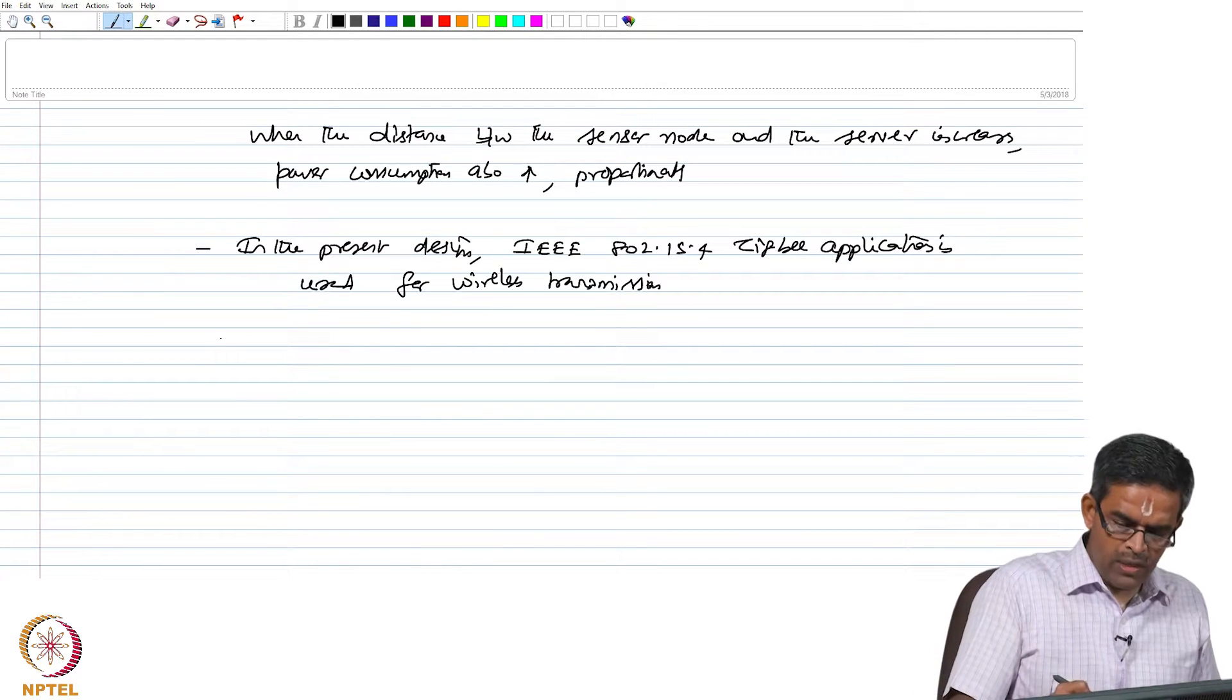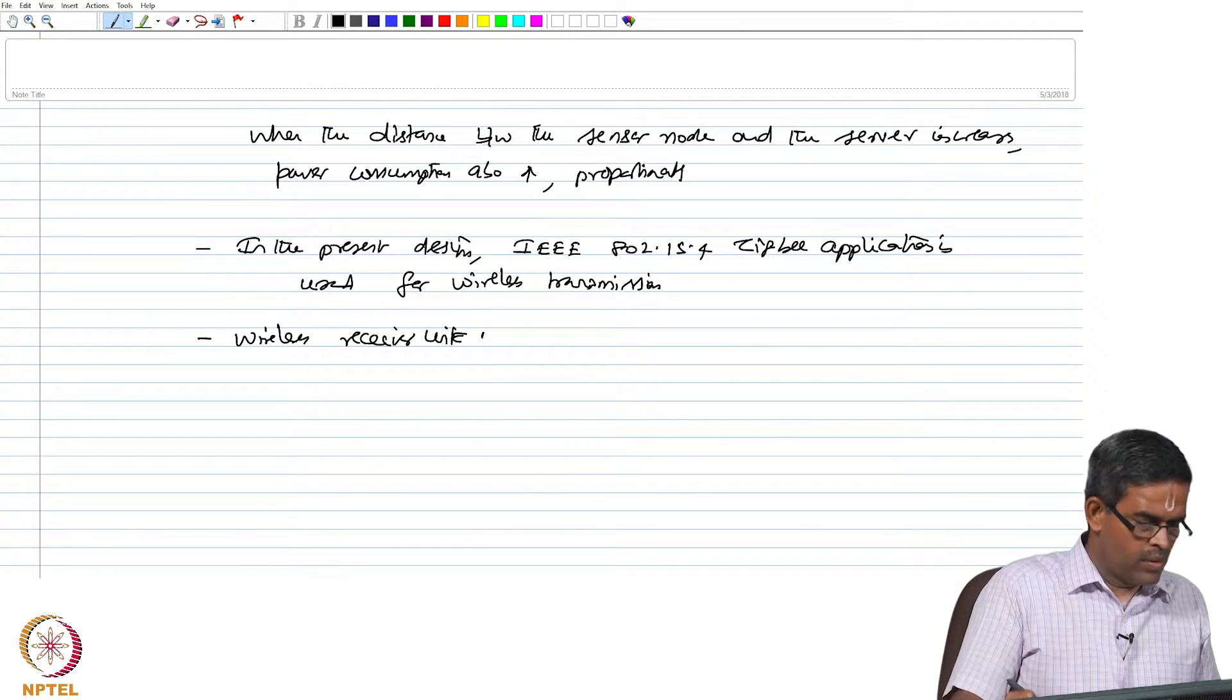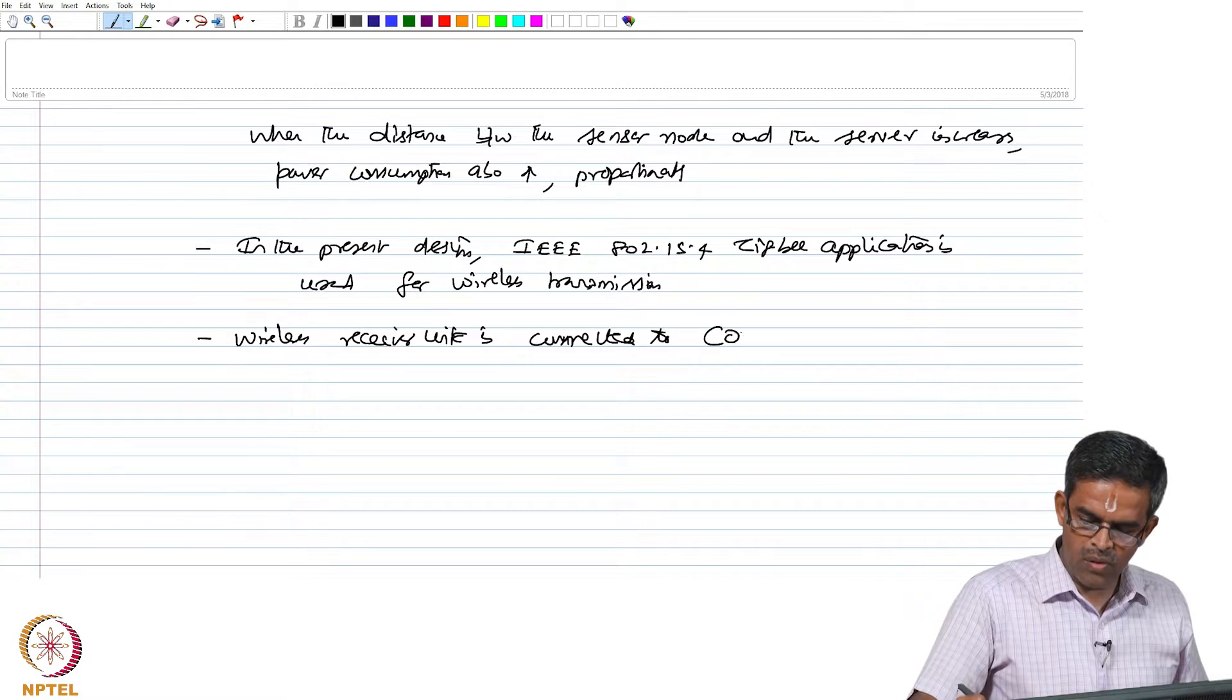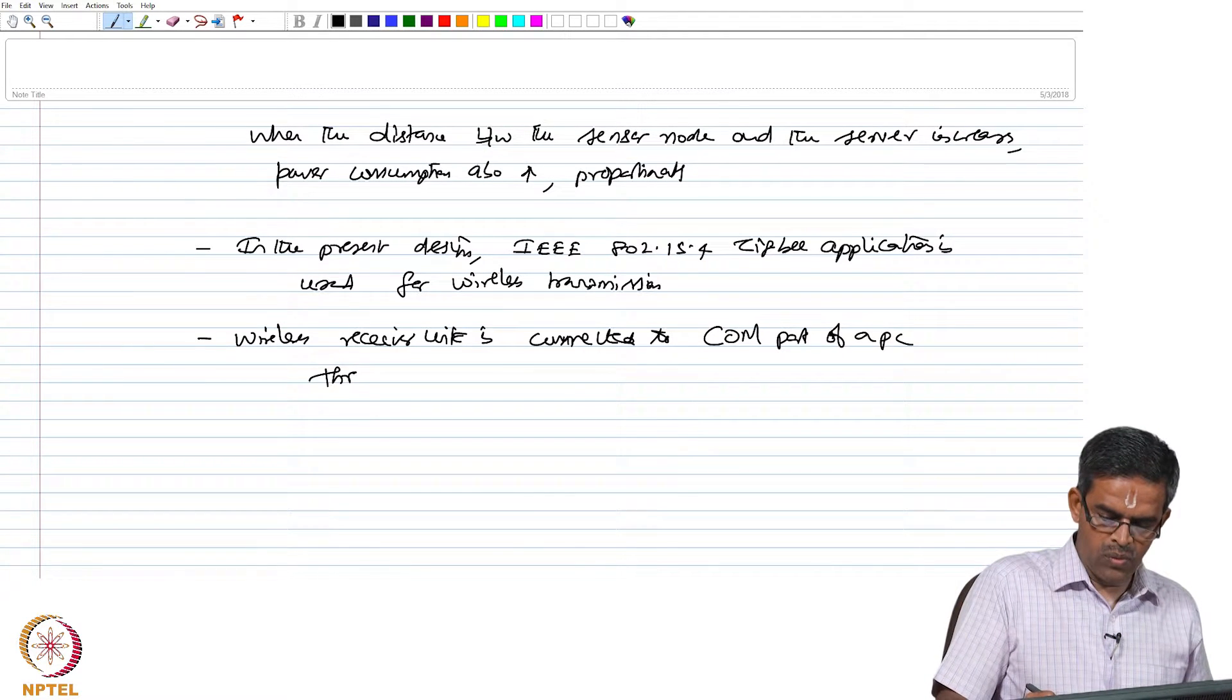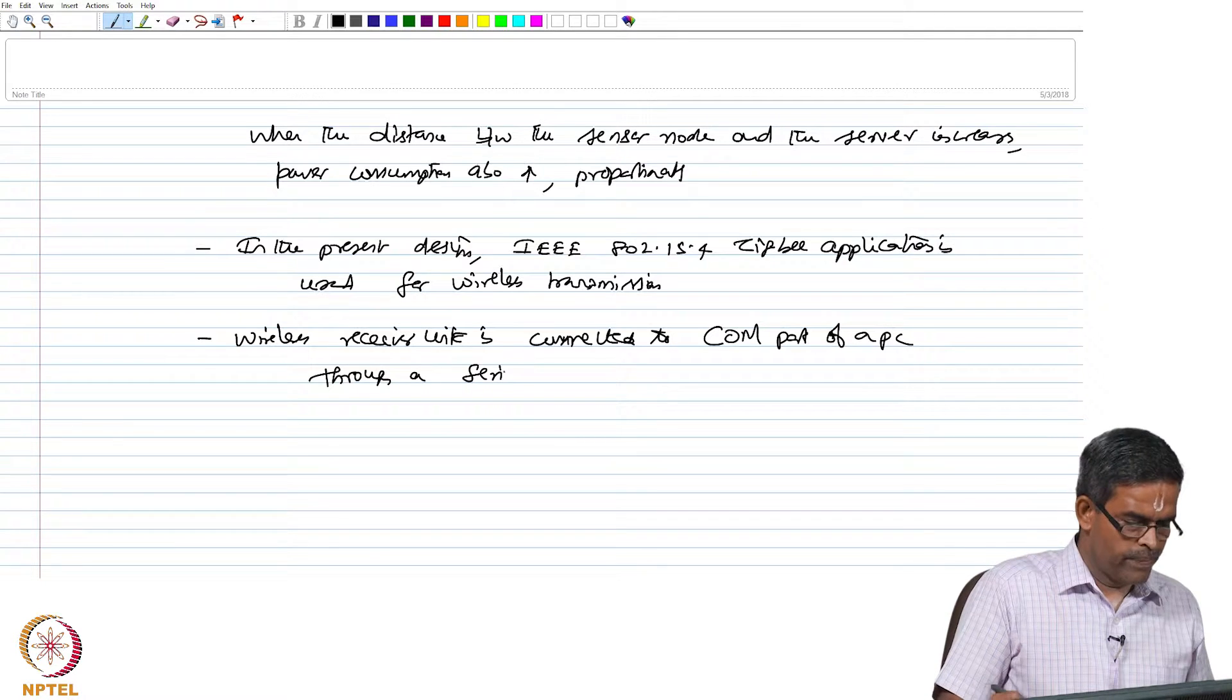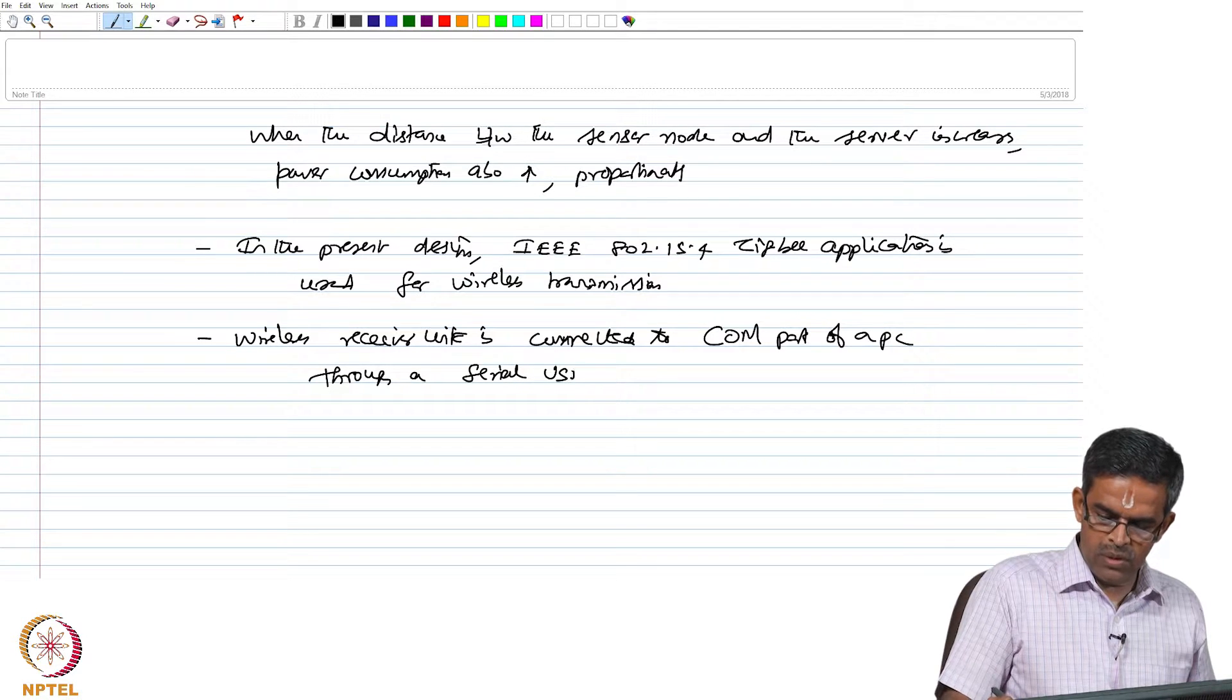The wireless receiver unit is connected to the COM port of the PC through a serial USB converter.